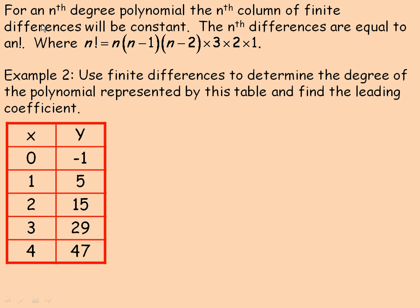In the example on the final page, we're told that for an nth degree polynomial, the nth column of finite differences will be constant. So if you have a third degree polynomial, the third column of finite differences will all be the same. If it was an eighth degree polynomial, the eighth column would be constant. The number in that constant column is actually the degree factorial — factorial means all the numbers from that number down to one multiplied together. For example, 3 factorial is 3 times 2 times 1.